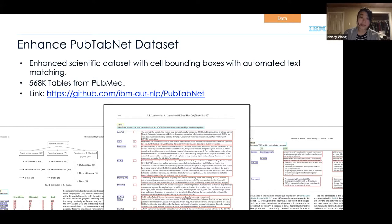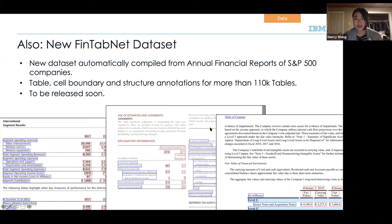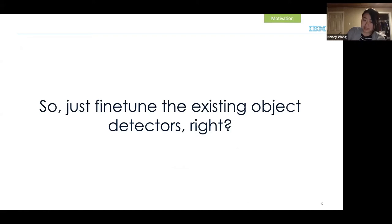We also found a similar correspondence in financial documents, which are quite important for IBM given our many financial customers. This dataset is automatically compiled from annual financial reports of S&P 500 companies filed with EDGAR, matched with their HTML versions. We have both table boundary and cell boundary annotations for more than 110,000 tables. I'm currently working with IBM to release this dataset publicly, which should be available very soon.